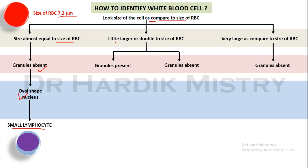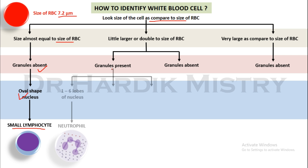If you find a cell which is little larger or double to the size of the RBC, check whether granules are present or absent. If granules are present, check for the number of lobes of the nucleus. If the cell is little larger or double to the size of RBC, granules are present, and there are 1 to 6 lobes of the nucleus, then this cell is known as neutrophil.